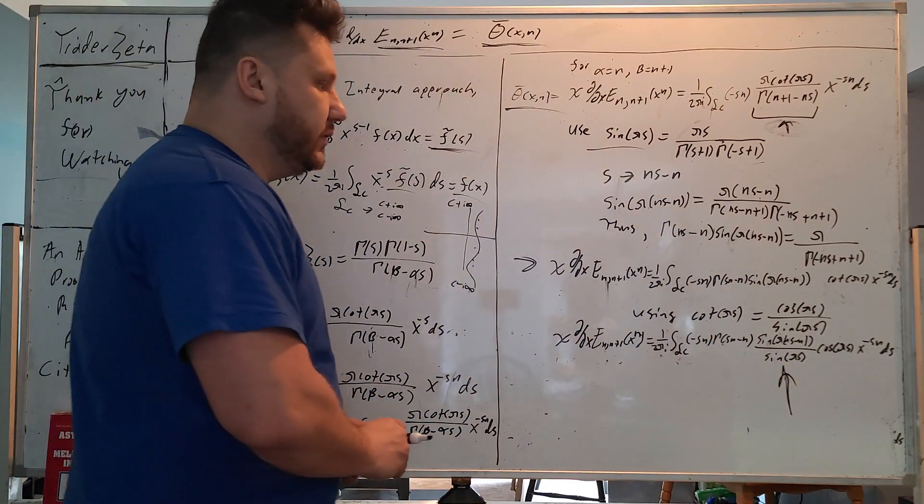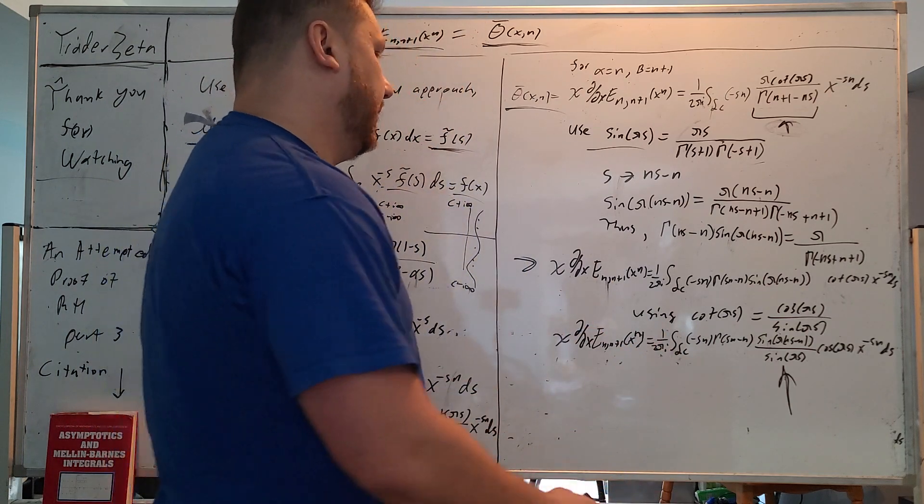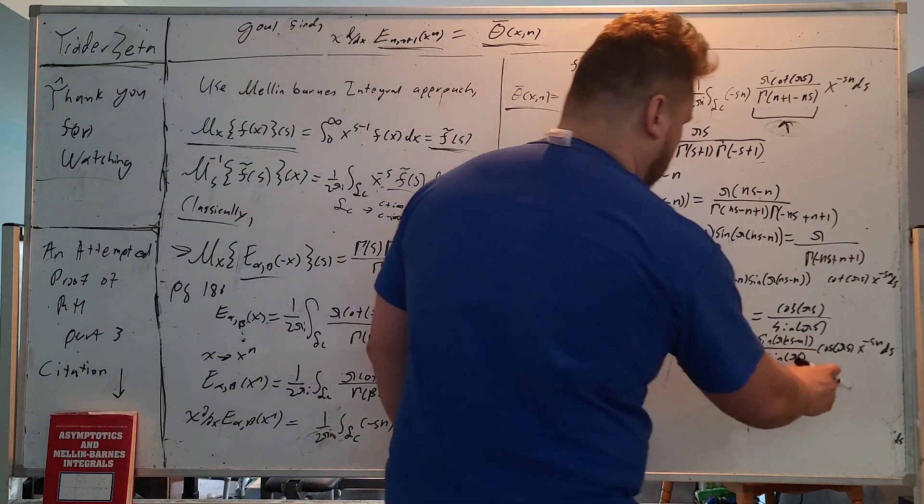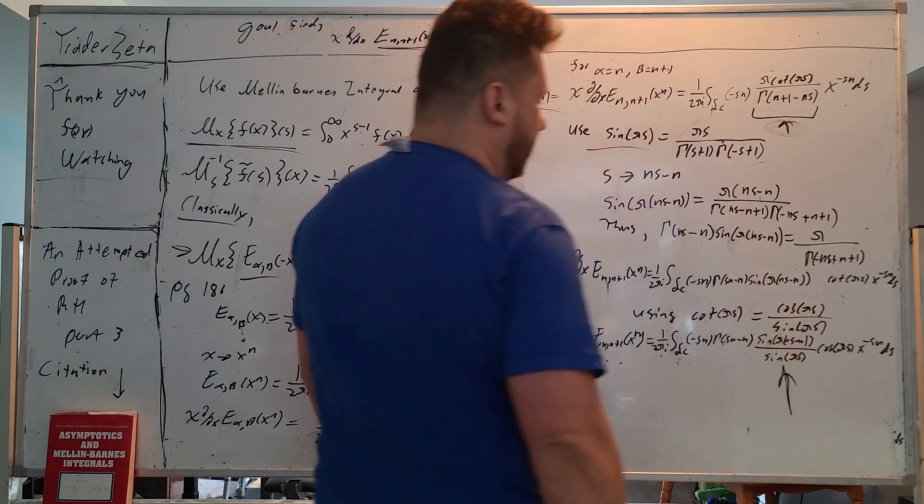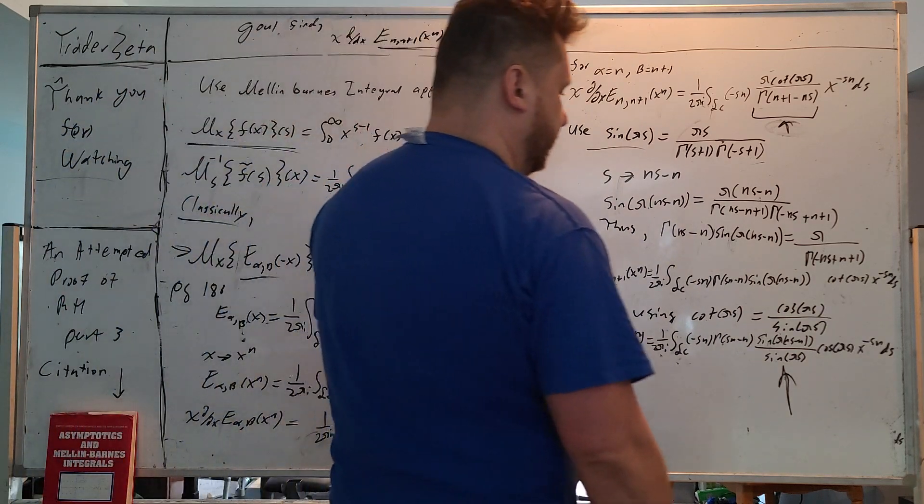Now, why is it so beautiful, you might ask? It has recursive property. And from recursive property, you can build a finite sum. So this right here is going to be the key for us getting our asymptotic expanse.